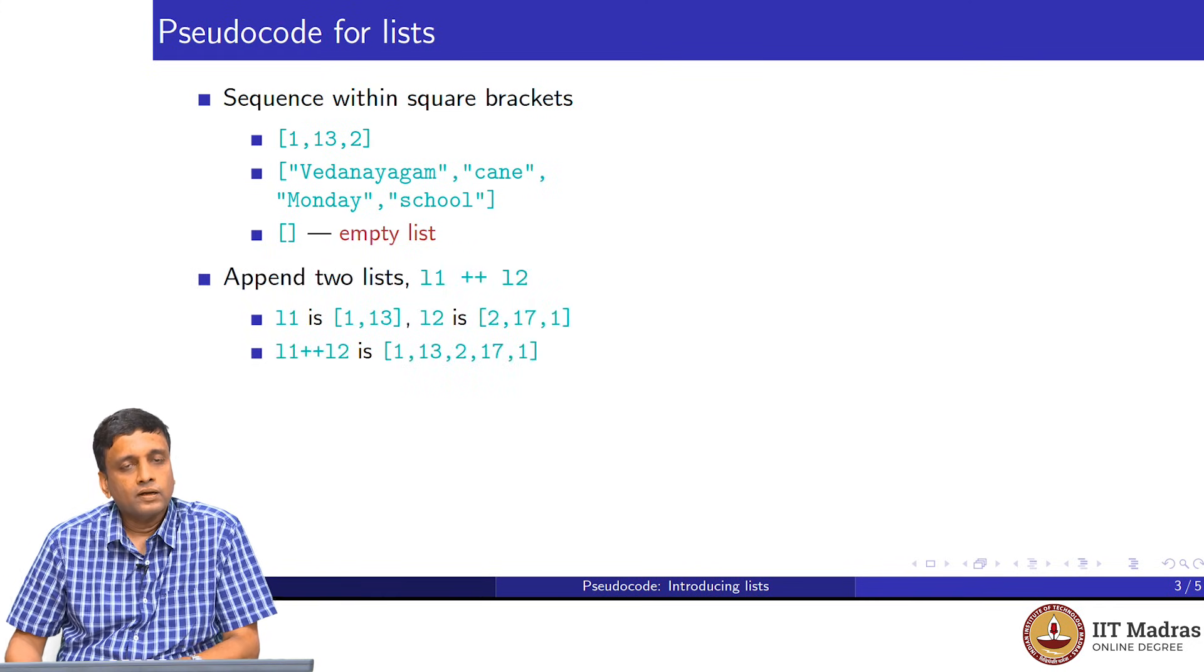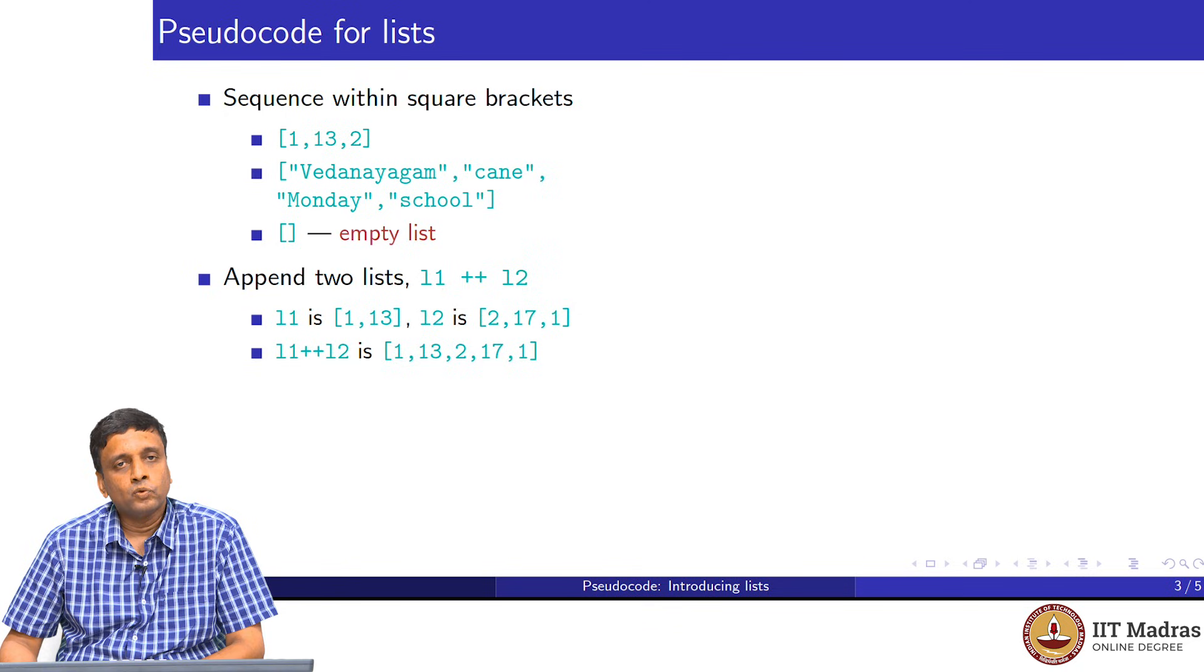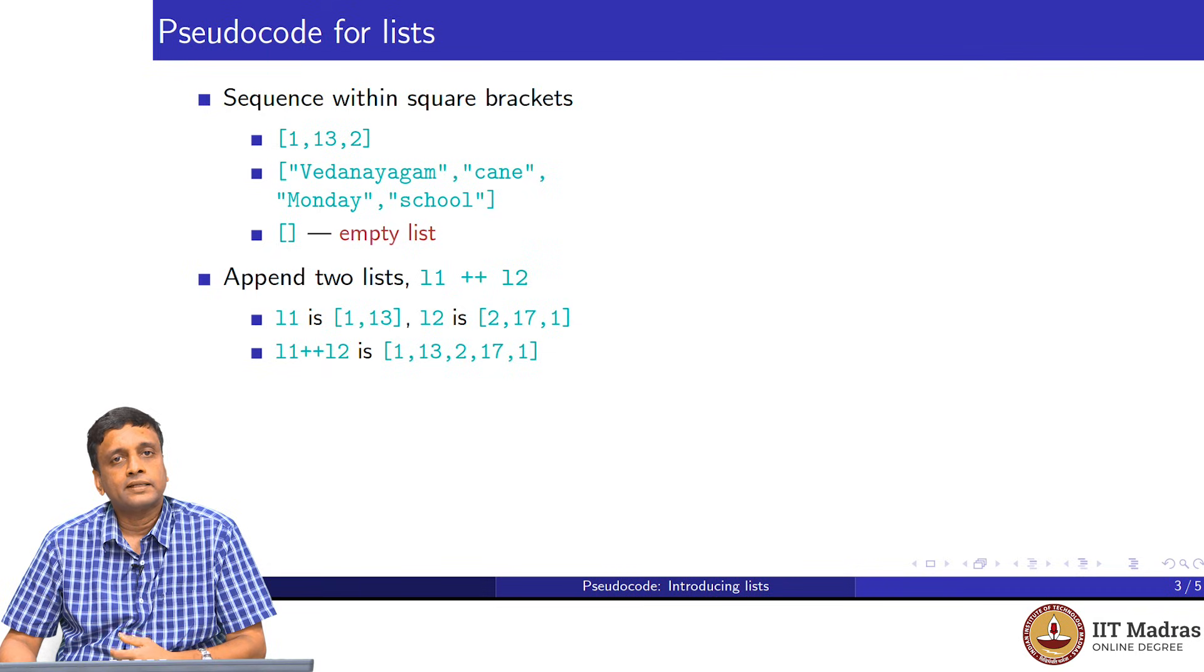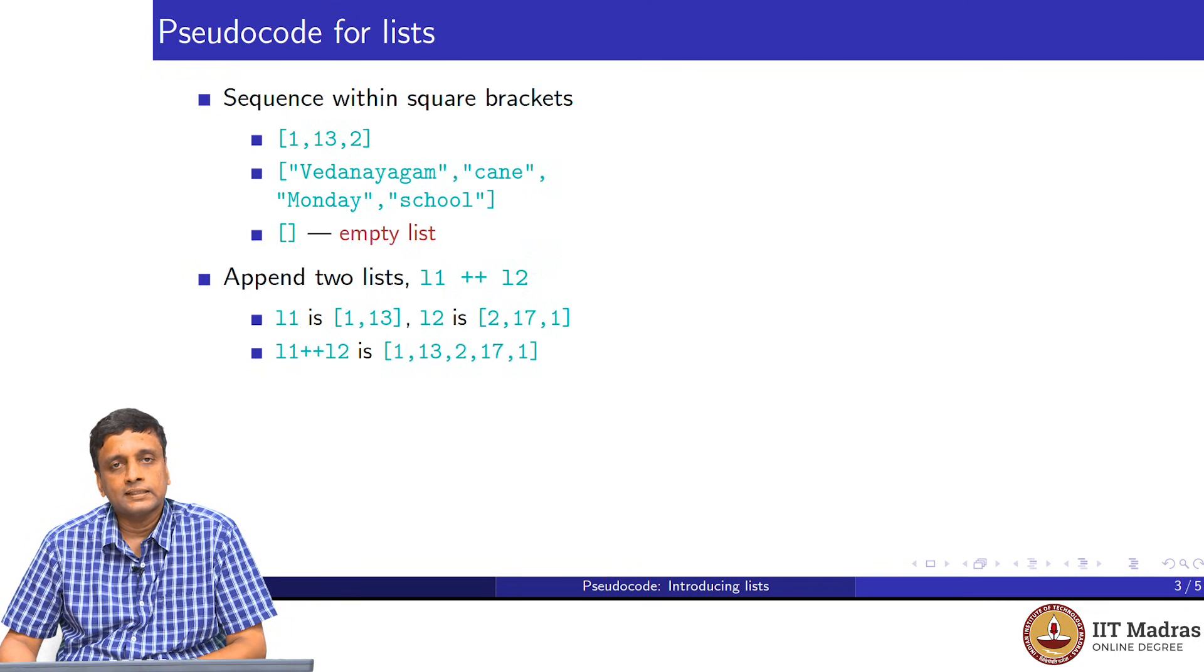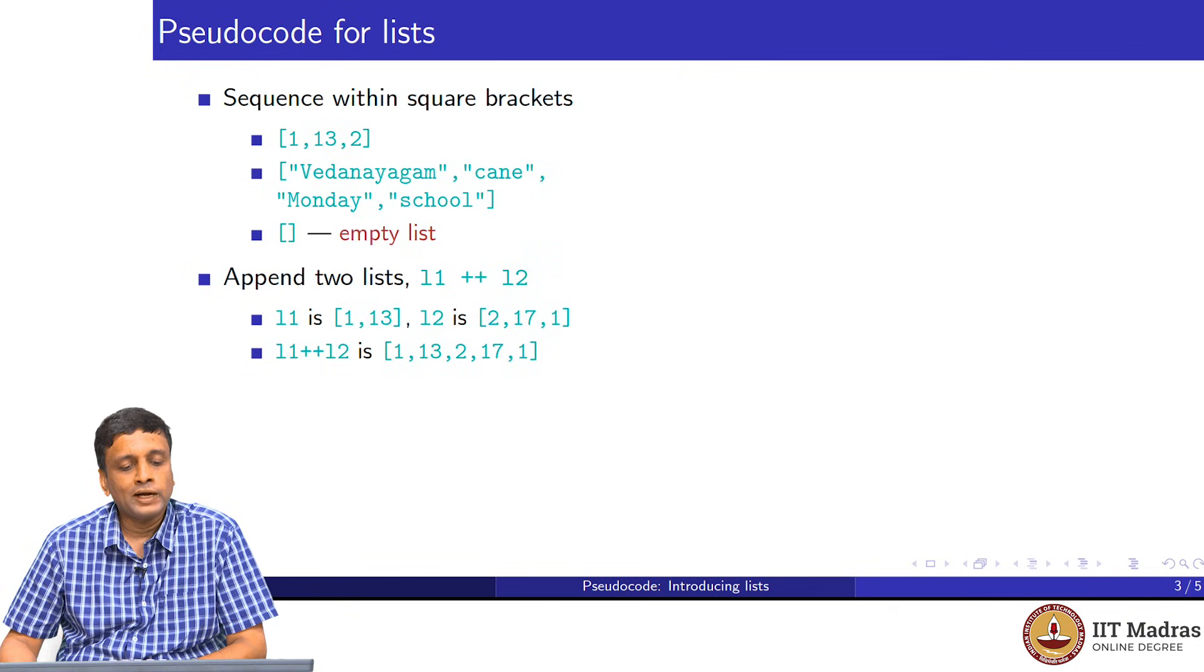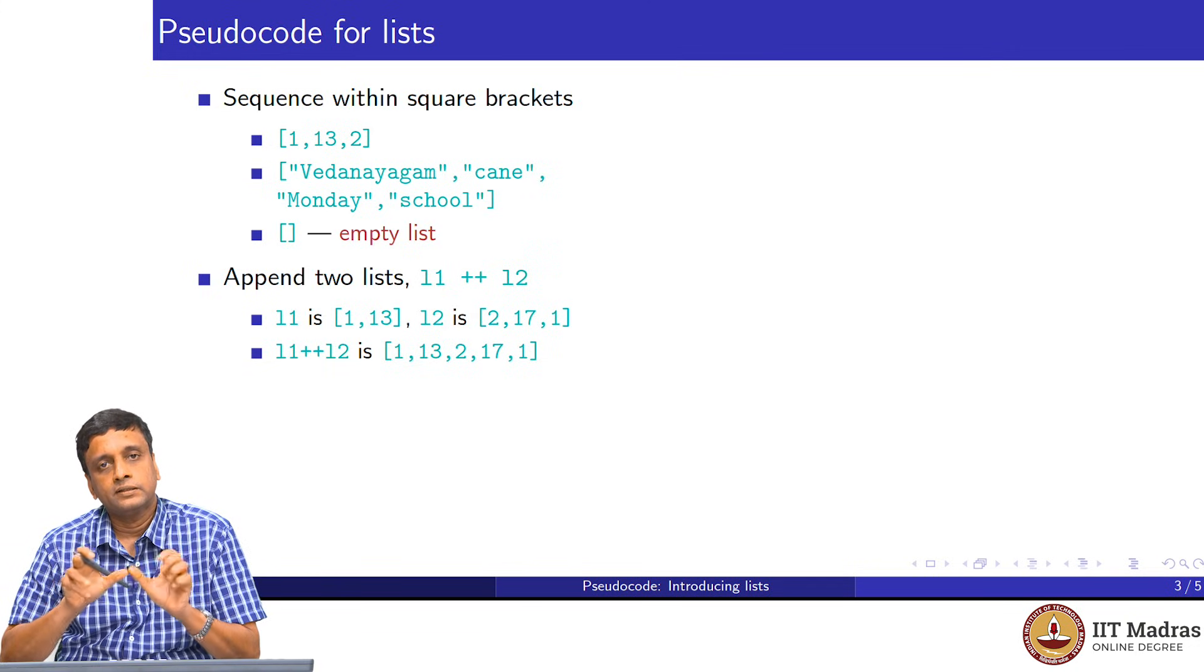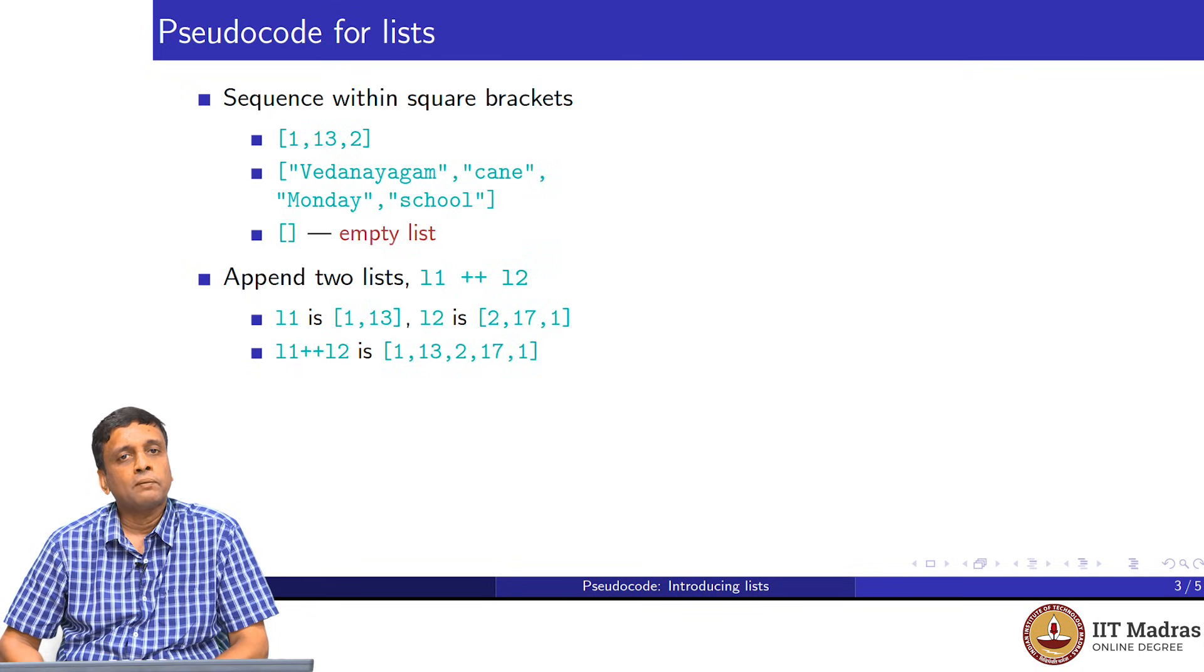Now, the first thing that we need to do is to be able to manipulate these lists. When we had numbers, we had expressions, arithmetic operations to add numbers, we had ways of extracting things from numbers. We need to do the same thing with lists. The most basic thing you can do with a list is to put two lists together to form a larger list. This we will call append, and we will write it using this double plus notation. If we have a list L1 and we have a list L2, and then we want to stick them together one after the other, then we write that as L1 ++ L2.